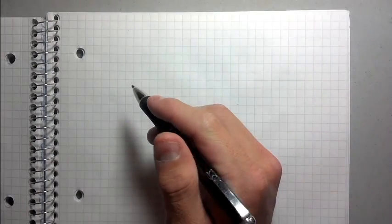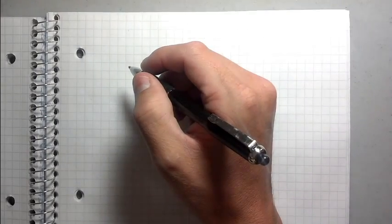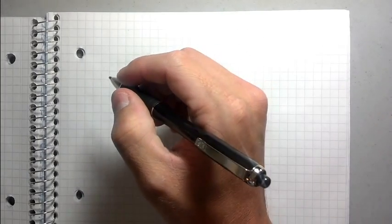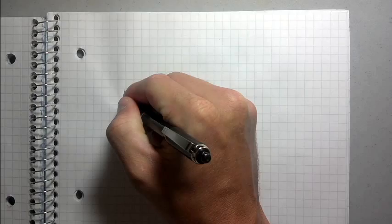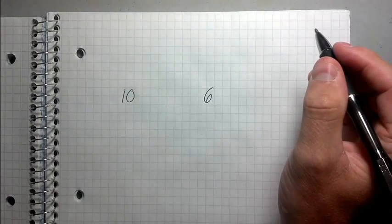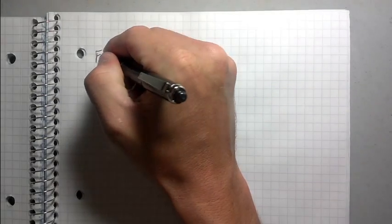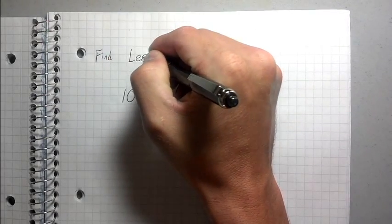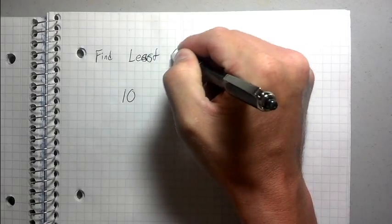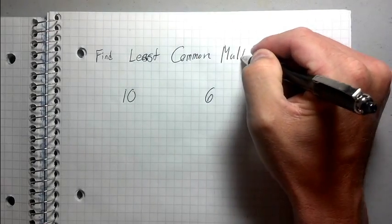I mean, it's all the same process, but I just want you to be aware of these three things you might run into. So let's say that we were given 10 and 6. 10 is our first number, 6 is our second number. Now we want to find the least common multiple. So this is our problem: find the least common multiple.